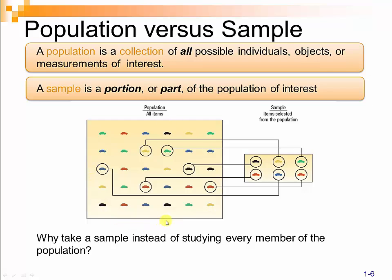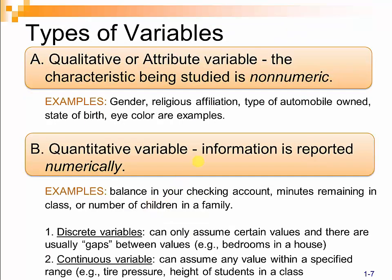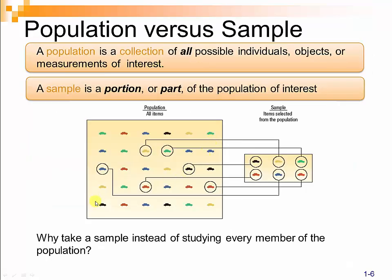When we look at the population, we might have every possible car ever made, or every possible 2015 model year car — that would be more difficult to study in its entirety. One reason we choose to sample is because of the prohibitive cost of a census of the entire population. In the United States, every 10 years we conduct a population census of all members of the citizenry, and that's very expensive.